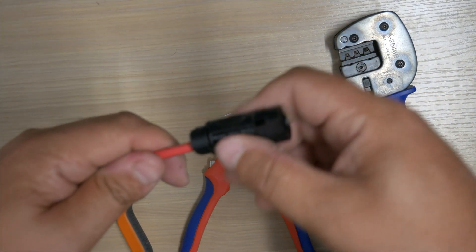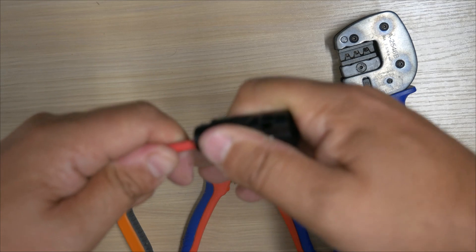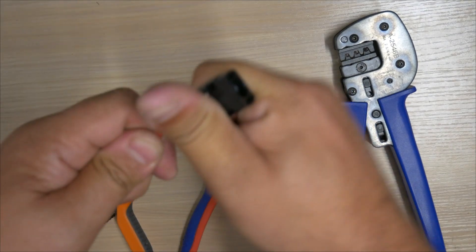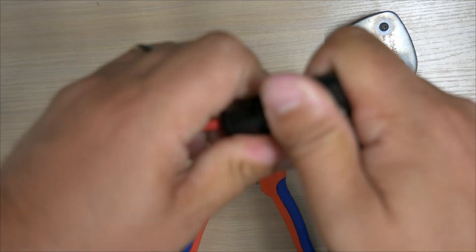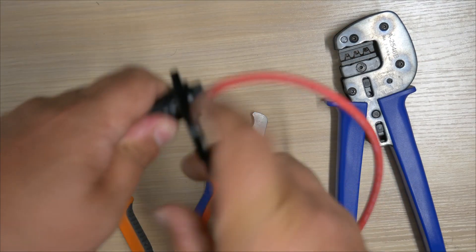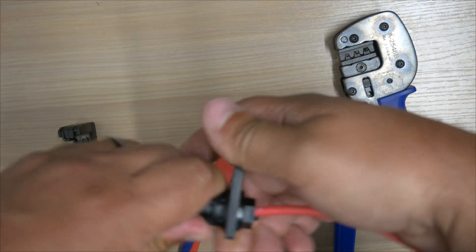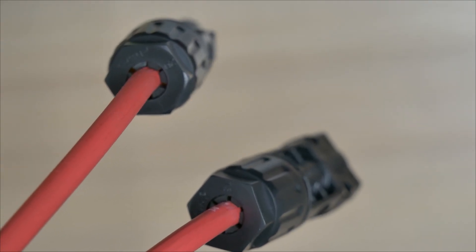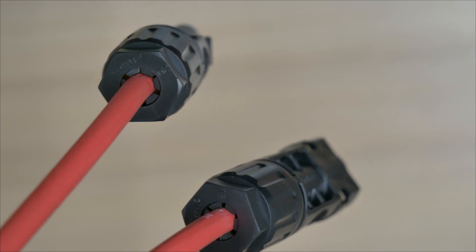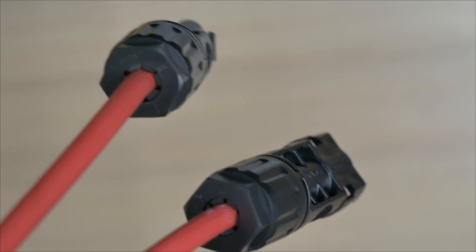We then need to push the end connector over the crimp until it clicks. And it won't then remove. Tighten the back up. And again, use the tool to make sure you've got that rock solid until it clicks. So if we look at the back of these glands, we can see the weather seal is tight on the cable. And we know that that is now locked into position securely. And no moisture is going to get inside these MC4 connectors.